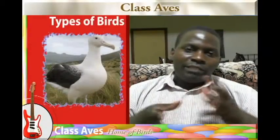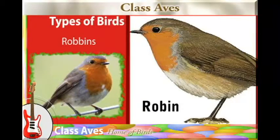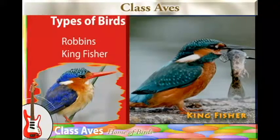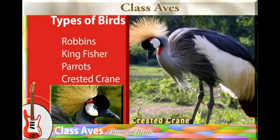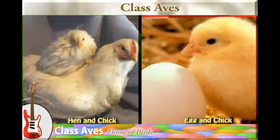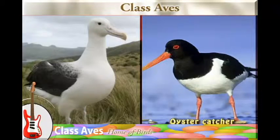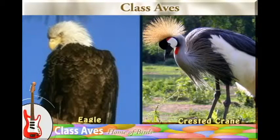There are several birds we can list, such as robins, kingfisher, mallard, crested crane, doves, and very many others. All of these are put in the same class of Aves, or birds, because of certain characteristics which they share, and those are the characteristics that we want now to talk about.